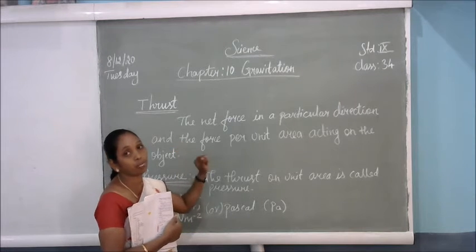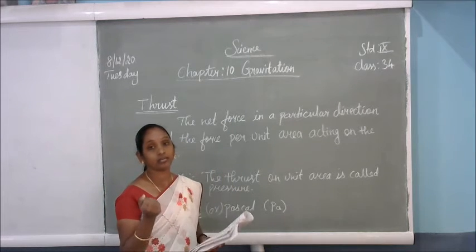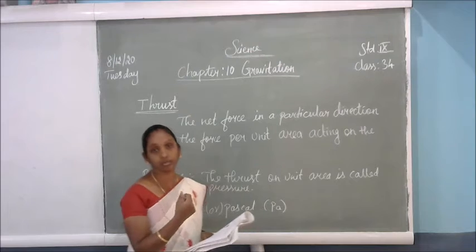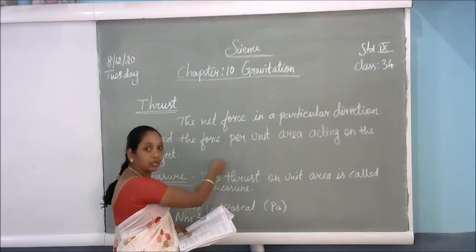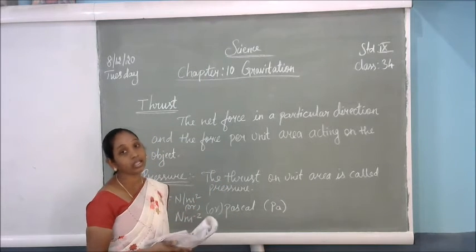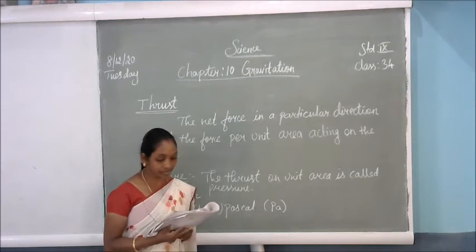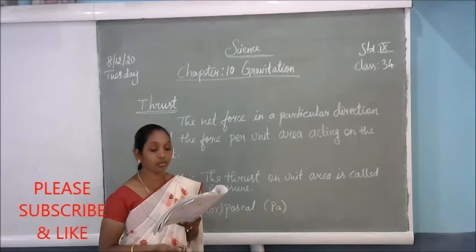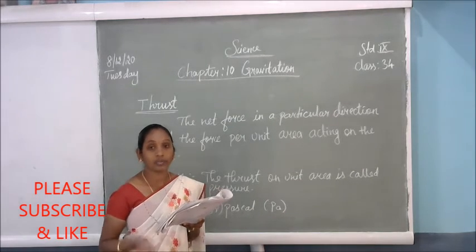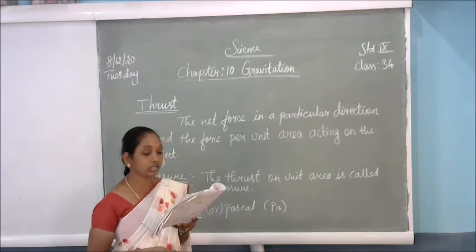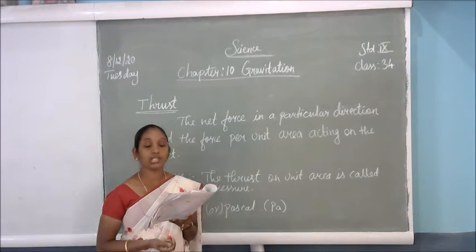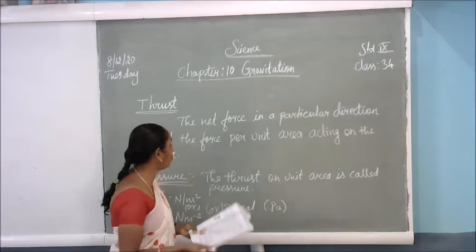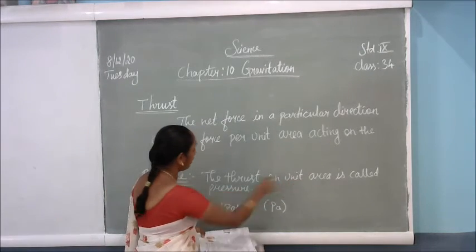That is the reason why a sharp knife or nail has sharp edges — at those edges, in a particular small area, we give more pressure. The effect of thrust on sand is larger when standing than when lying. The thrust on the unit area is called pressure. This type of thrust in a particular area is called pressure. Pressure is equal to thrust divided by area.